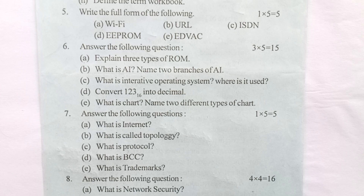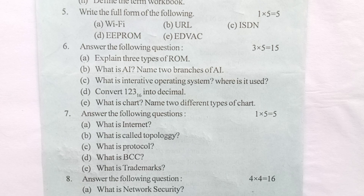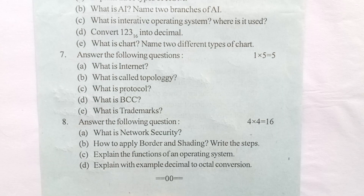Question 7: Answer the following, carrying 1×5 = 5 marks. (a) What is the internet? (b) What is called topology? (c) What is protocol? (d) What is BCC? (e) What is a trademark?